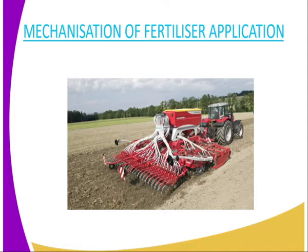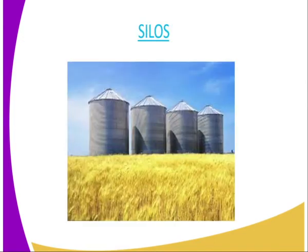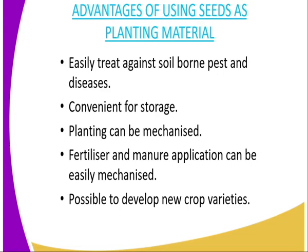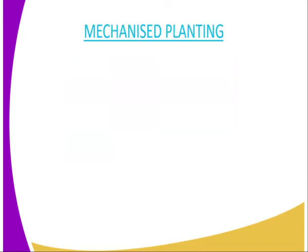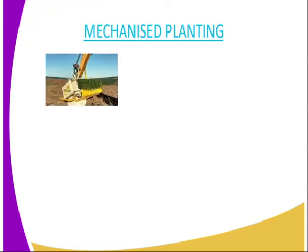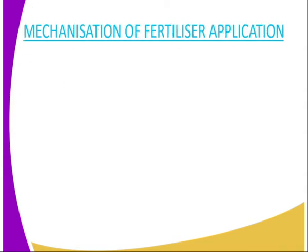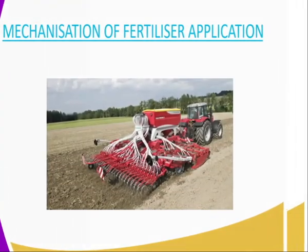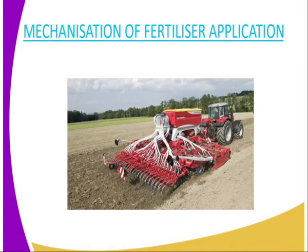Therefore, mechanization of fertilizer application together with the seed as you plant will lead to low cost of production. Finally, it is possible to develop new crop varieties. That is very true because seeds experience cross-pollination, which is effected by various agents of pollination such as bees. Once cross-pollination is effected, new varieties of crop may develop — varieties which may favor farming, for example a variety which is highly resistant to pest attack and diseases.